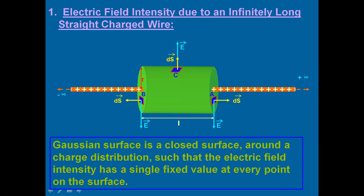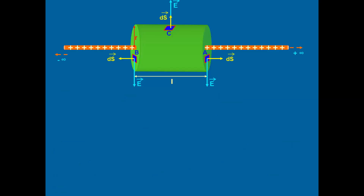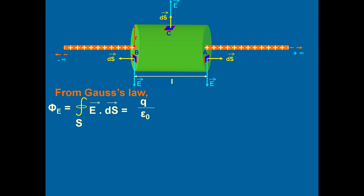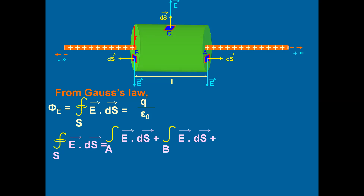Now we can apply Gauss's theorem for this surface. The mathematical expression is φ = ∮E·dS = q/ε₀. The total surface of the cylinder is split into three parts, so we can write: ∮E·dS = ∮E·dS over surface A + ∮E·dS over surface B + ∮E·dS over surface C. Now, E·dS = E dS cosθ.